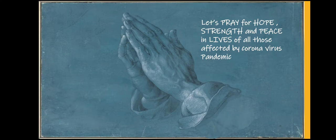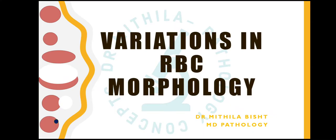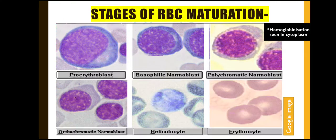Hello and welcome everyone. I hope everyone is keeping safe in this COVID-19 pandemic. Today I will be discussing variation in the RBC morphology. To study the morphology of RBC through the general blood picture is important because it gives us a clue about the clinical condition of the patient. We do it by examining the peripheral blood smear or the general blood picture.